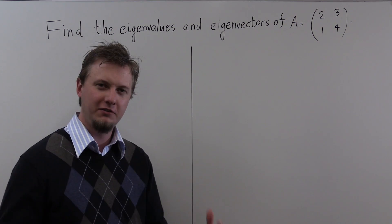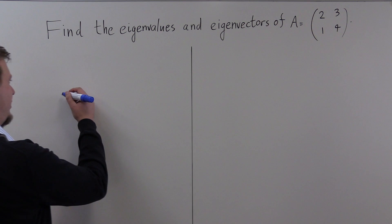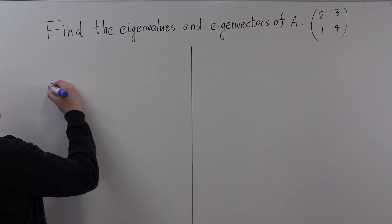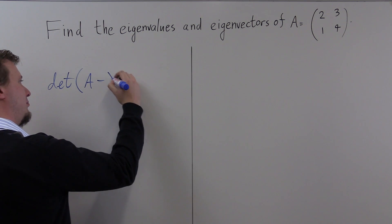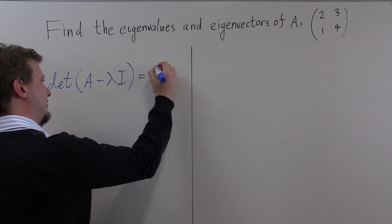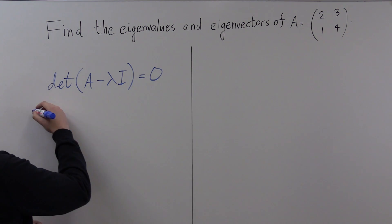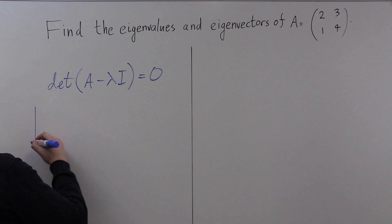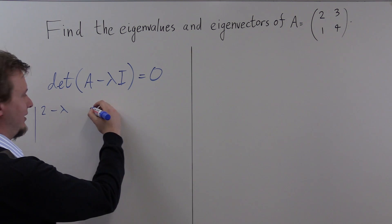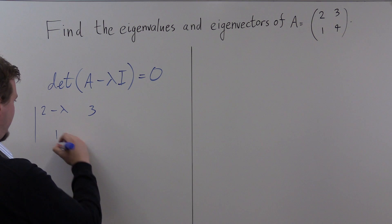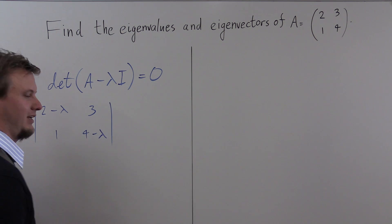The eigenvalues are the solutions to the characteristic equation. The characteristic equation is the determinant of A minus lambda I equals zero. If we calculate that, it is the determinant of the matrix with entries 2 minus lambda, 3, 1, 4 minus lambda.